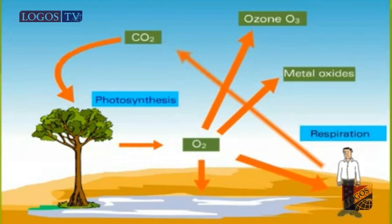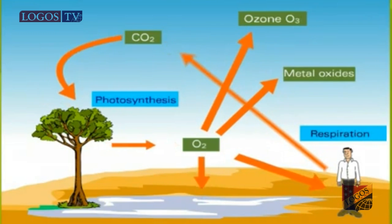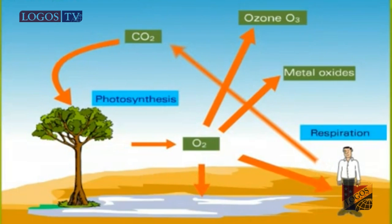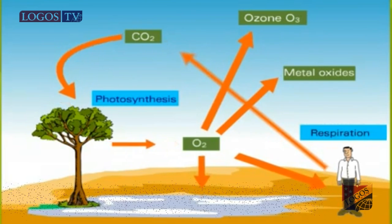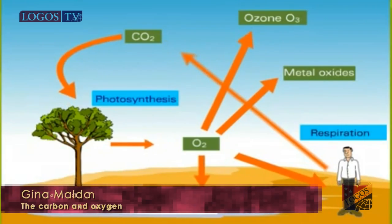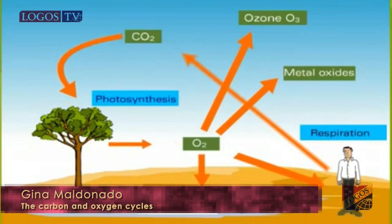Oxygen cycle. Oxygen is found throughout the ecosystem. Producers release oxygen during the photosynthesis process. Organisms take the oxygen from the air or water and use it to carry out their life processes. In this way, both processes show that the oxygen and carbon cycles are very closely linked, and each one depends on the other.